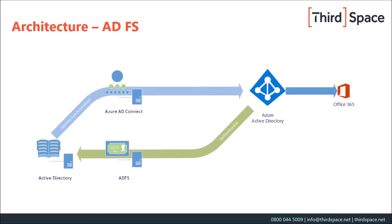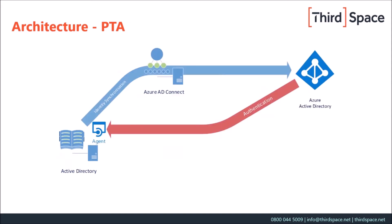If we have a look at the ADFS architecture, we can see that we've got ADFS sitting in front of Active Directory, and that's how we gain access to Office 365. Slightly different when we move on to pass-through authentication. Here, when the user tries to access Azure Active Directory and sign in, that authentication request is sent to an agent inside Active Directory for authorisation. Once the user has been identified with their ID and their password, the reply comes back to Azure Active Directory, and it's Azure Active Directory that actually issues that token to allow the user to sign in.